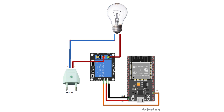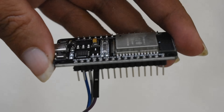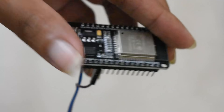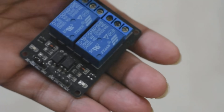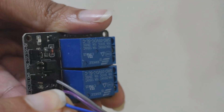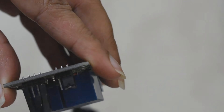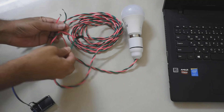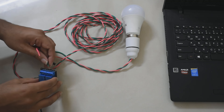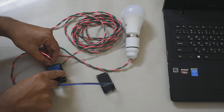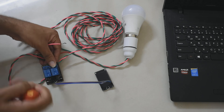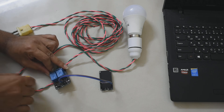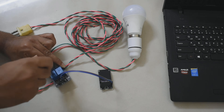Now let's look at the electrical connections for the project. On the right side is the ESP32, and the other component is the relay module. The relay module is used to drive the bulb. Let's do the wiring for this circuit and build the entire project.